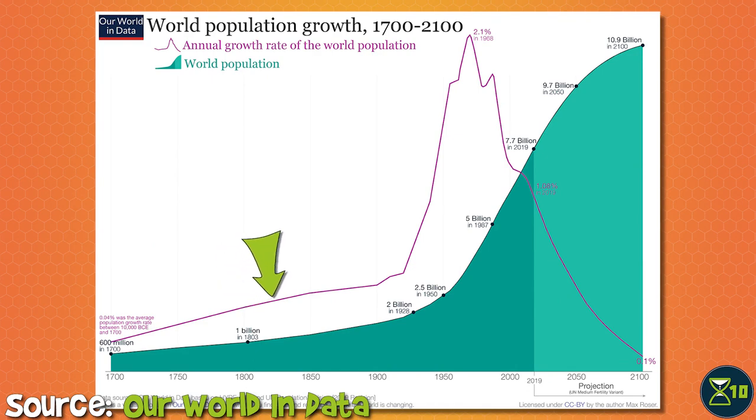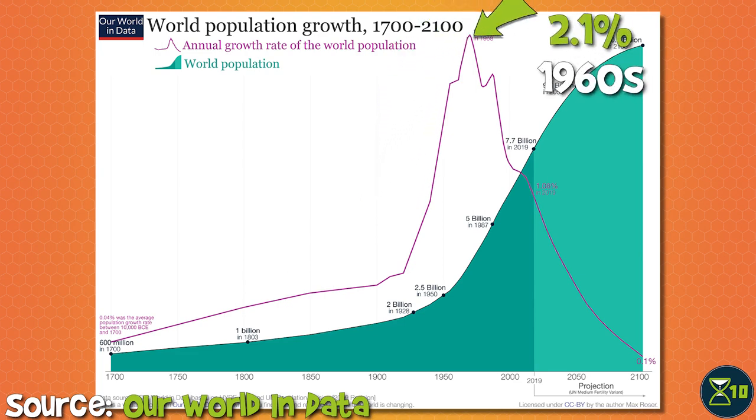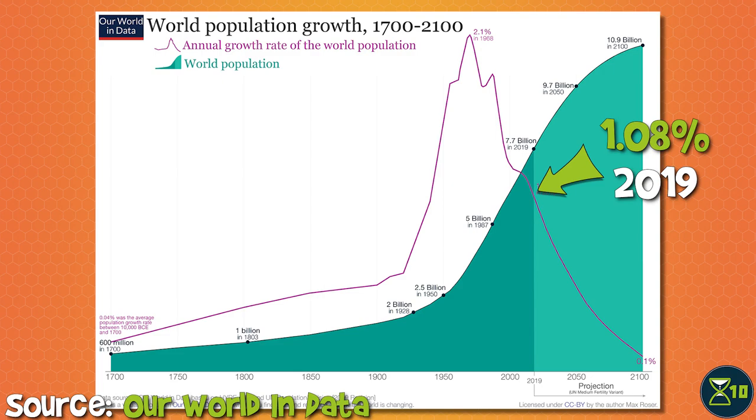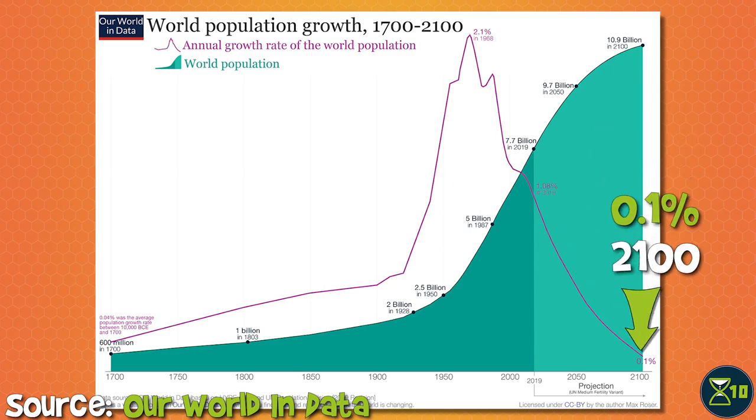This means there was a relatively long phase with high birth rates and falling mortality, which pushed up the global population growth rate. Indeed, the world population growth rate was at its highest in the 1960s, when it hit about 2.1%. Since then, it has been plummeting. Right now, it's around 1.08%, and it's projected to keep falling down to 0.1% in 2100.